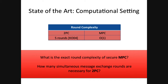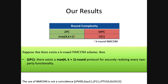So the question is: is the bound really five rounds in the 2PC setting if we have simultaneous message transmission, even in the two-party case? Here are our results. Suppose we have a k-round non-malleable commitment. Then in the two-party case, we can have a protocol of max(4, k+1) rounds for any general functionality.